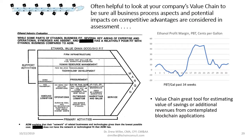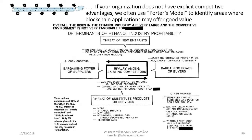Sometimes we look at a company's value chain to help estimate what savings and advantages they'll get from changing a business process with blockchain, and in some assignments we've had to do full value chain analysis to better estimate cost savings. Blockchain can also give you competitive advantage — for example, TradeLens is cutting ocean shipping costs significantly, and if you're using a blockchain system and your competitors aren't, that could be a major competitive advantage. We sometimes use Michael Porter's competitive advantage model to identify what competitive advantages you may get from blockchain.